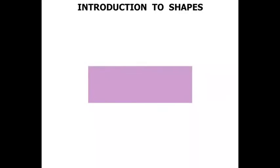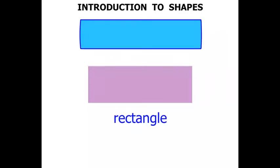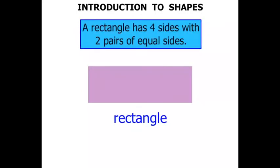What about this shape? This is a rectangle. A rectangle has four sides with two pairs of equal sides.